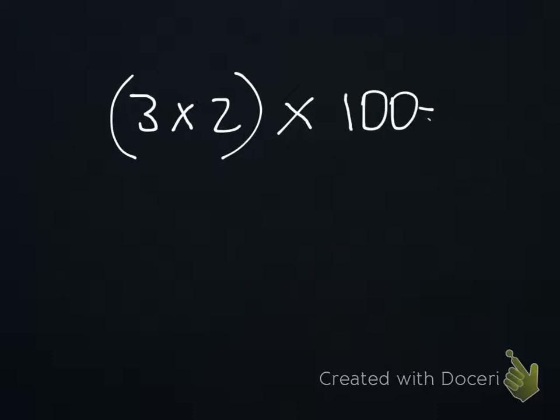In order to solve this, what we do is we always do the part that's grouped first, the 3 times 2, which equals 6. And then once we complete that 3 times 2 that equals 6, we take the 100 and we multiply it with the product from the problem that was grouped. And 6 times 100 would be 600.